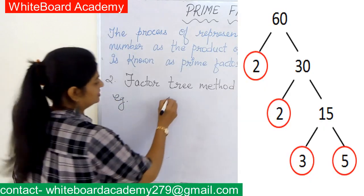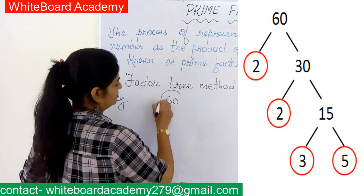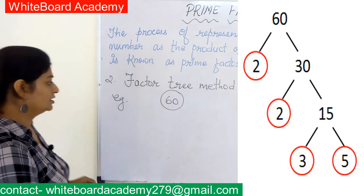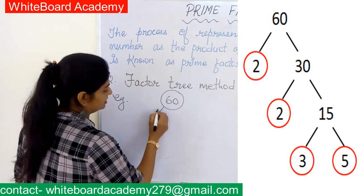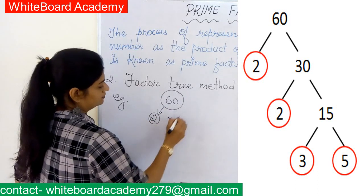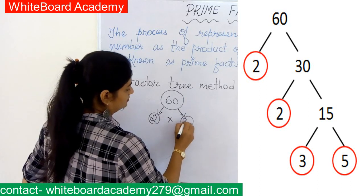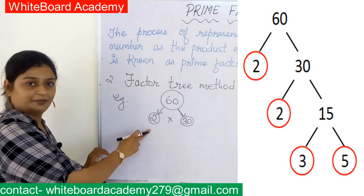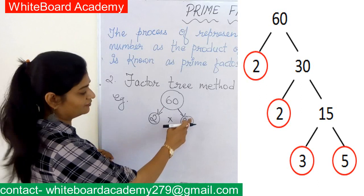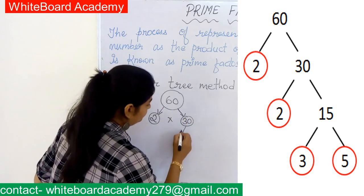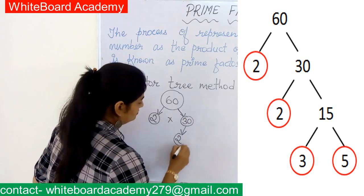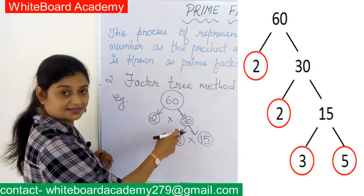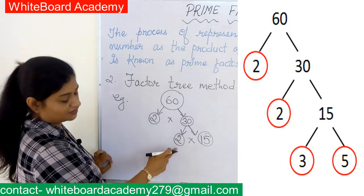Now let's move on to the second method — the factor tree method. Let's find the prime factorization of 60. The smallest factor for 60 is 2, so 2 into 30 equals 60. We already got one prime number here, but 30 is a composite number so we need to convert it further into prime factors.